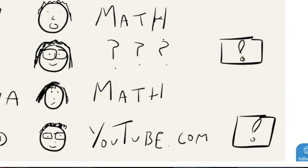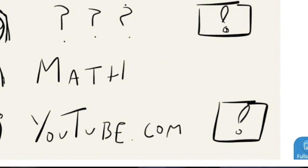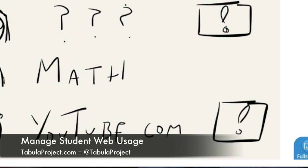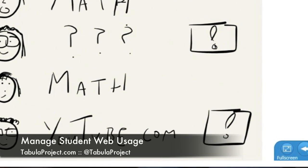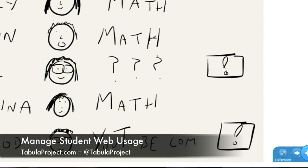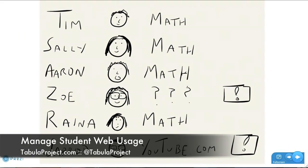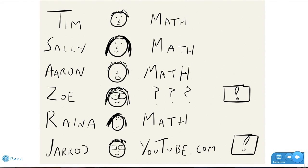And then we look at Jared, and Jared is using the tabula browser, and the tabula browser can tell us that Jared is on youtube.com. So maybe Jared is watching a Khan Academy video that relates to the math lesson, or maybe Jared's watching a music video, which is what some of my students did when I was teaching middle school computers at a lab a few years ago.